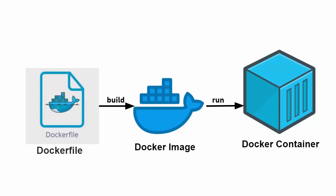Welcome to the next video on Docker tutorial for beginners. In this video we will talk about basics of Dockerfile. Docker can build images automatically by reading the instructions from the Dockerfile, which is a text document containing all the commands a user could call on the command line to assemble an image. Once you write your instructions in the Dockerfile, you build it to produce a Docker image, and when you run the Docker image it's called the Docker container.